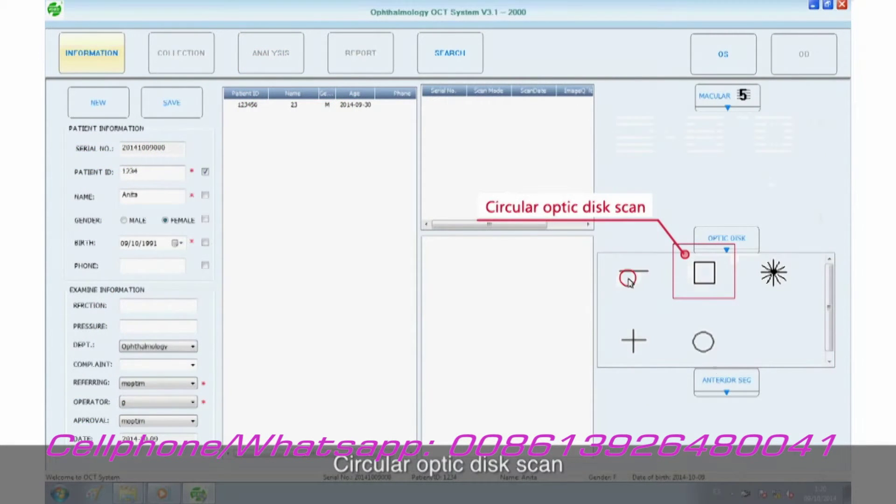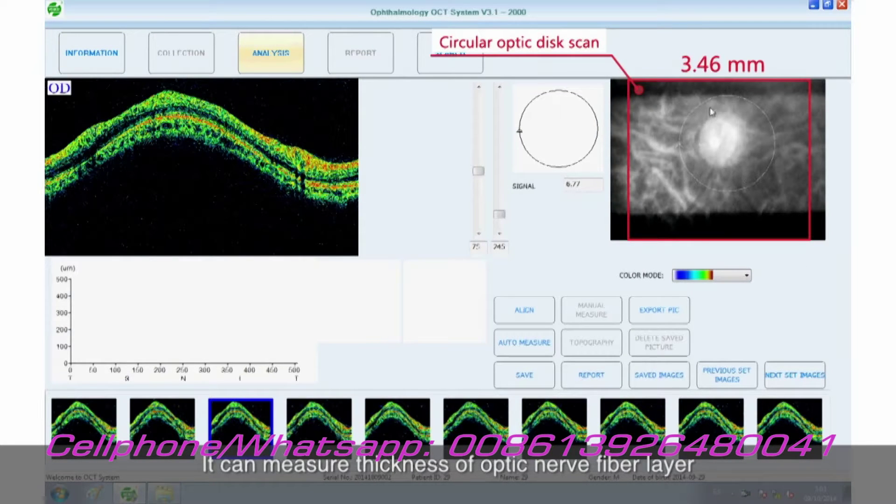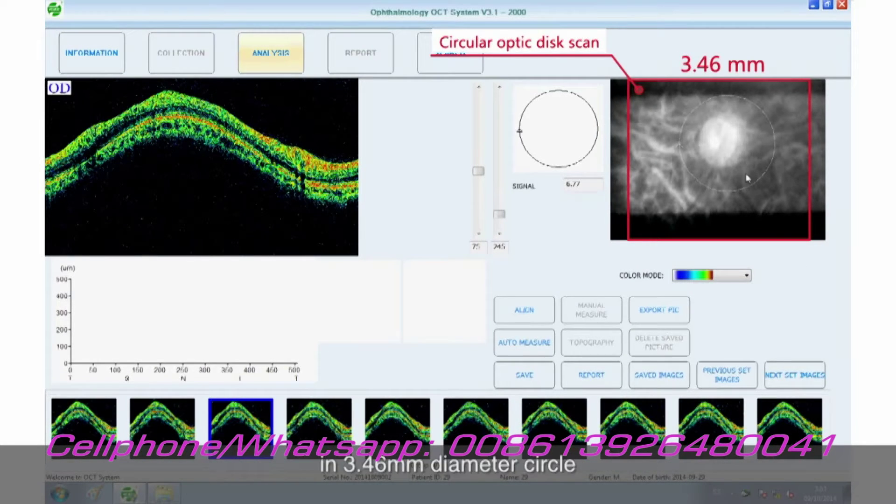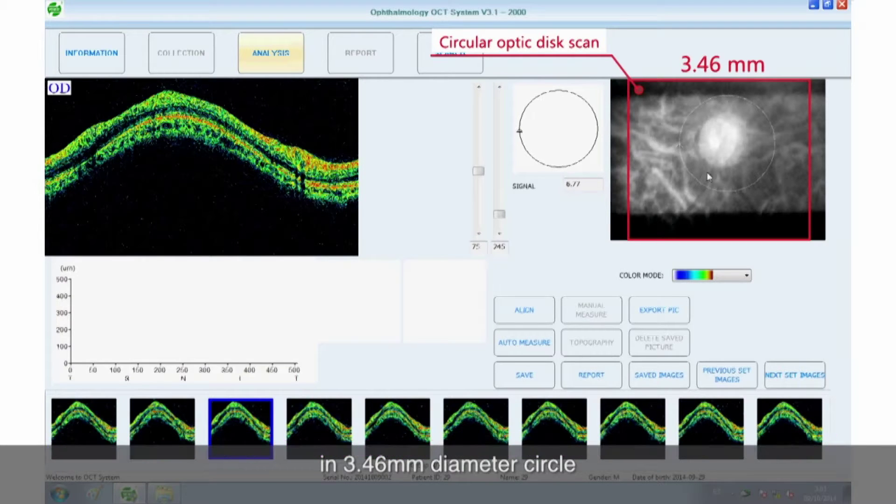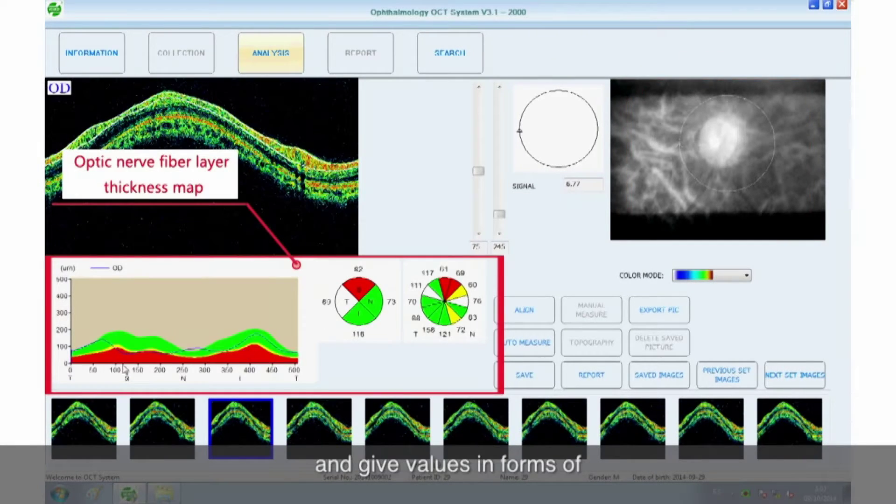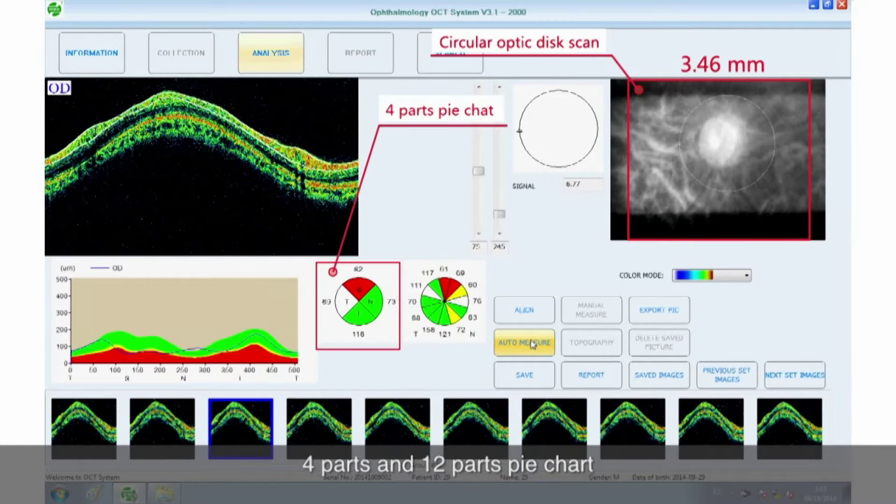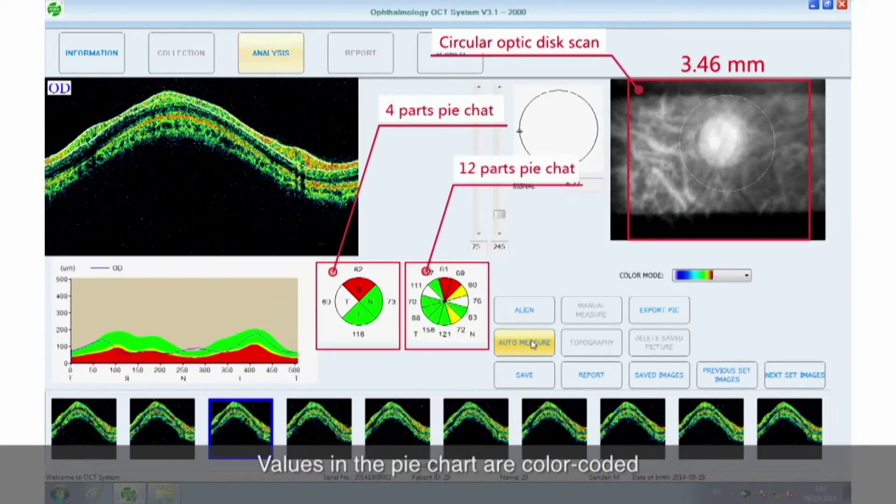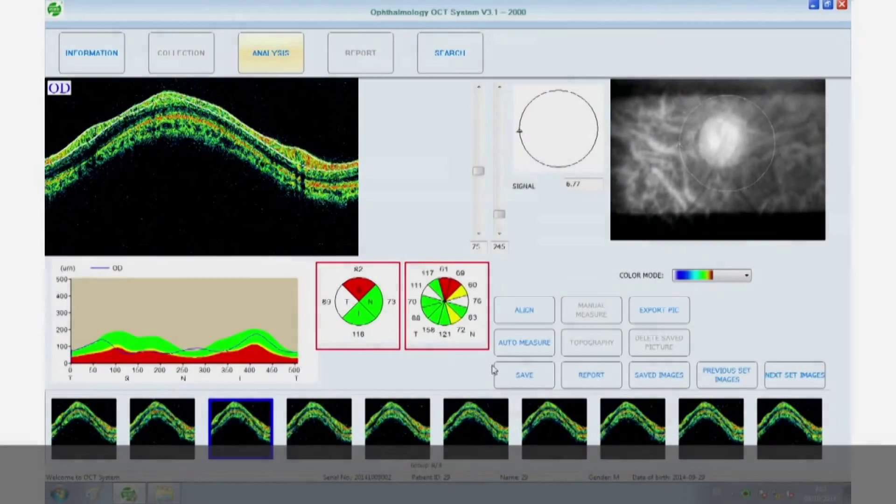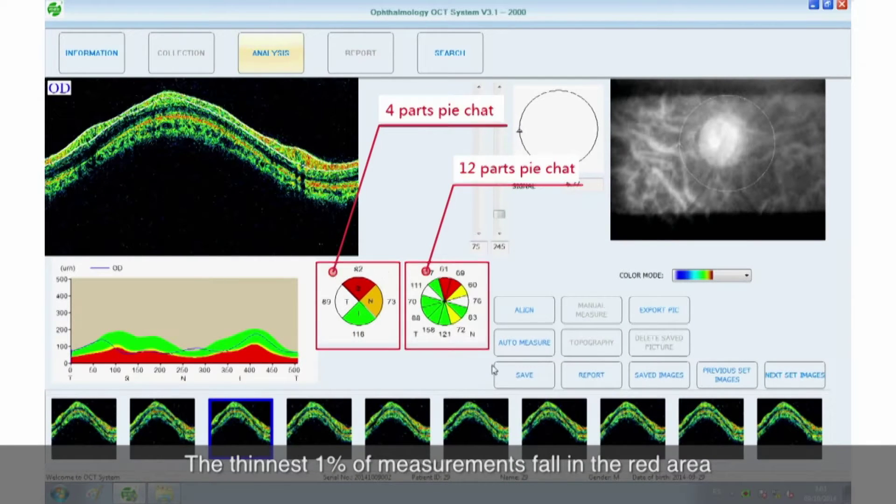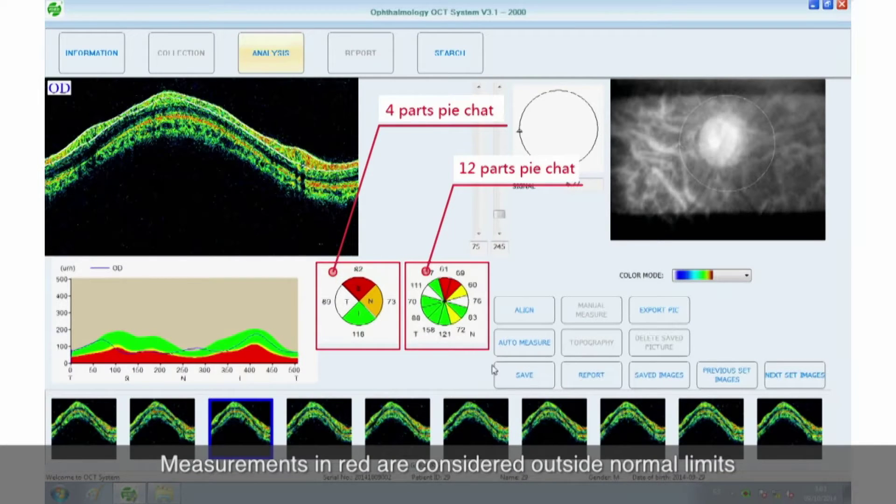Circular optic disc scan. It can measure thickness of optic nerve fiber layer in 3.46 millimeter diameter circle and give values in forms of 4 parts and 12 parts pie chart. Values in the pie chart are color coded.